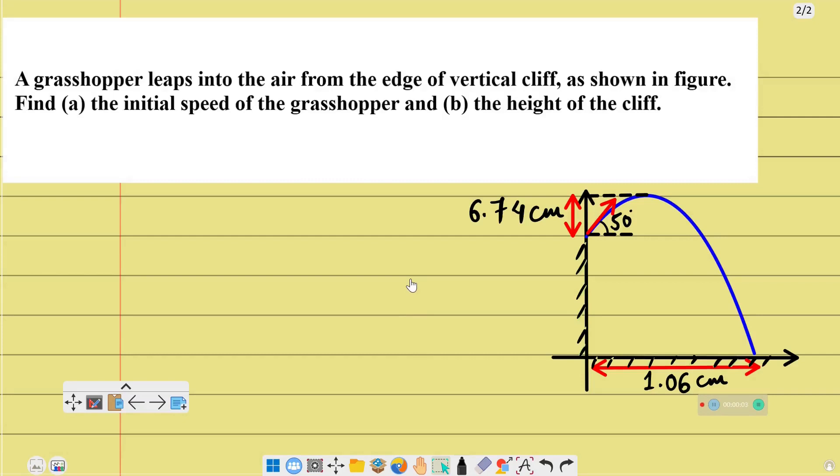Today we will solve a question. A grasshopper leaps into the air from the edge of a vertical cliff. The grasshopper jumps from the edge of the cliff.